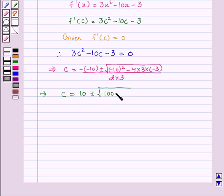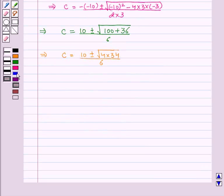This implies c = (10 ± √(100 + 36)) / 6. This implies c = (10 ± √136) / 6.